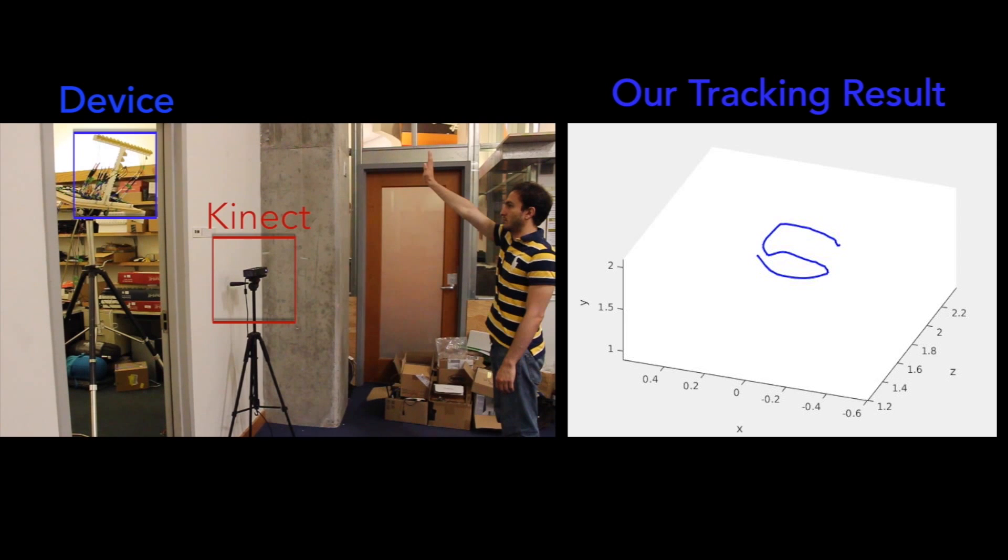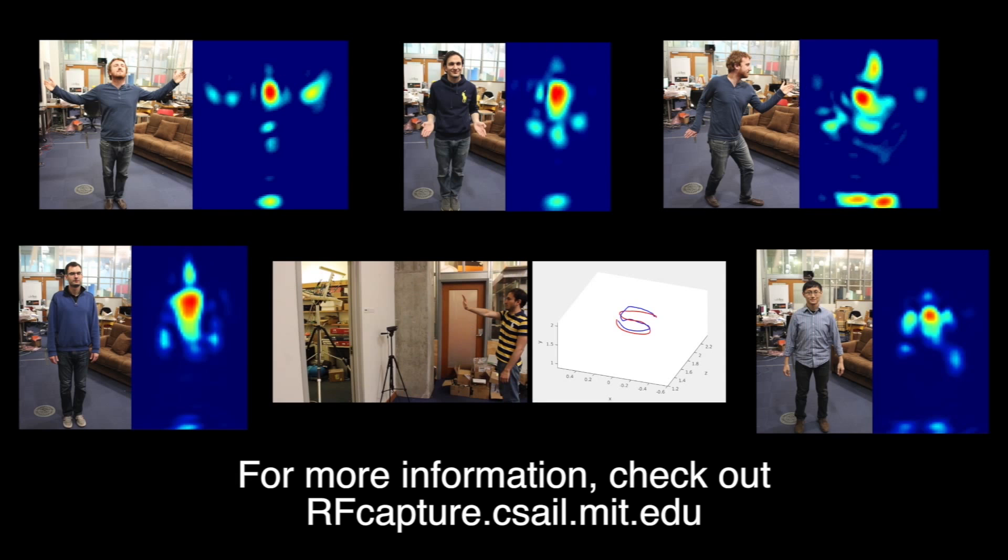We compare the device's output to that of a Kinect placed directly in front of the person, and show the Kinect's output in red. In comparison to Kinect, our median error is around 2 cm. For more information on how the device works, check out our project webpage.